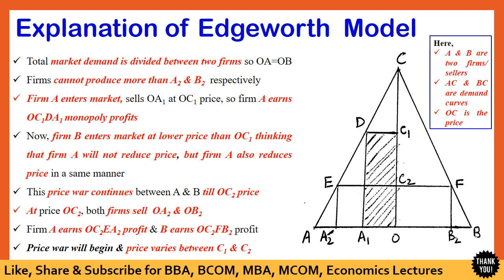These firms cannot produce more than A2 and B2 because of their limited capacity. Now, if firm A first enters the market, it sells OA1 units at OC1 price. Here firm A earns OC1-D-A1 monopoly profits, as shown by the shaded area. A1 lies halfway of OA, so this combination is profit maximization.